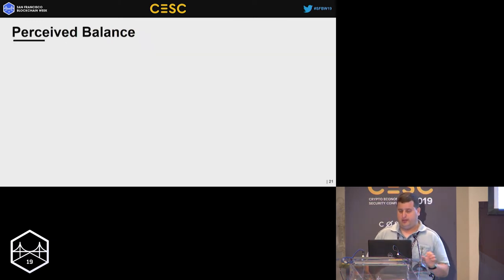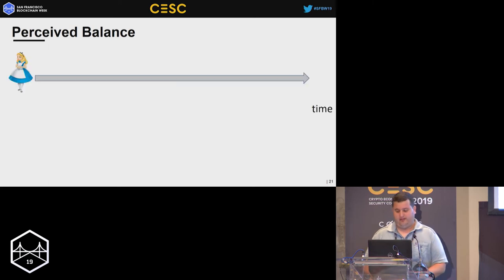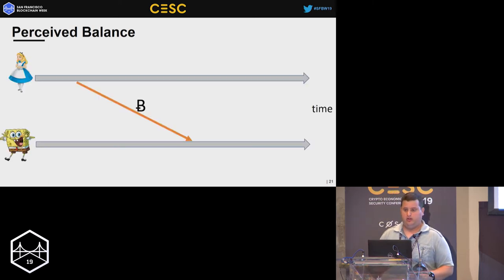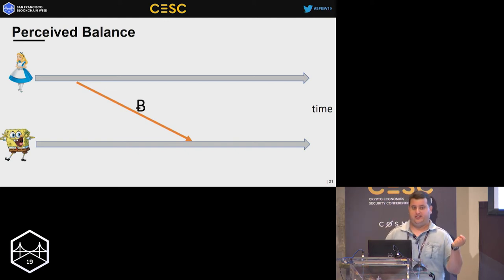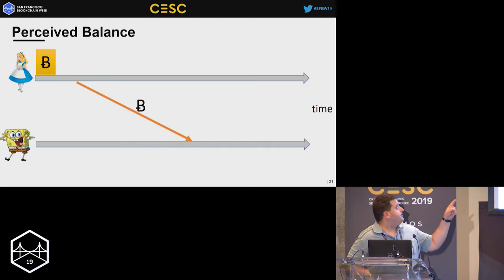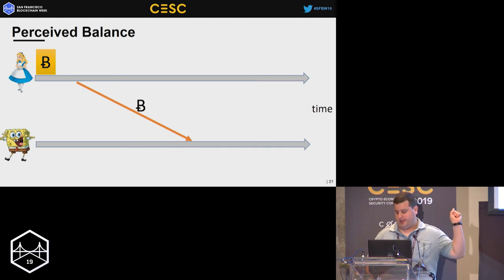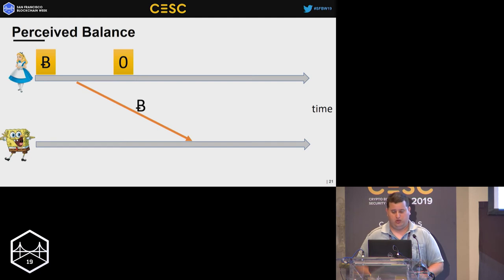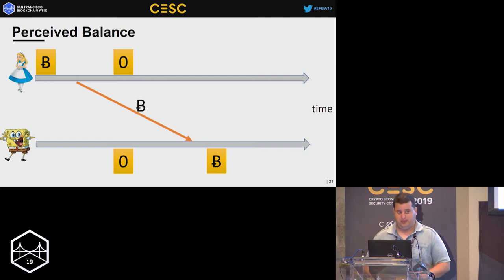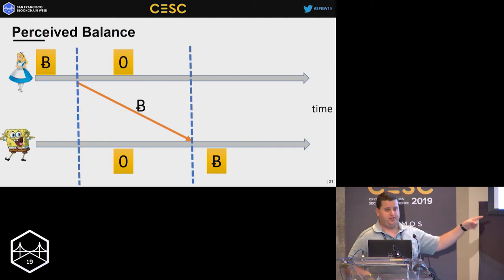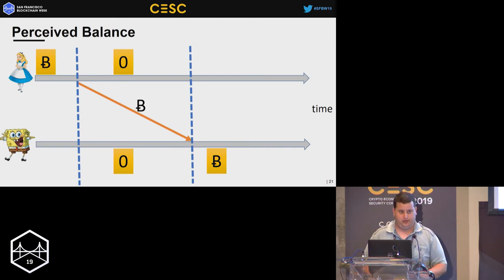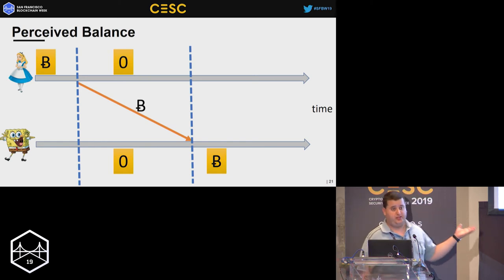It's important to explain perceived balance through an example. Alice pays Bob one Bitcoin on the channel between them. Paying means sending a message in an asynchronous setting, where messages take time to arrive and we don't know how long. Alice had one Bitcoin before sending the message; after sending she has zero. Bob had zero before receiving; after receiving he has one. Between when the message left and when it arrived, both Alice and Bob think they have zero Bitcoins. That's fine — it's part of the definition when you have asynchronous communication.